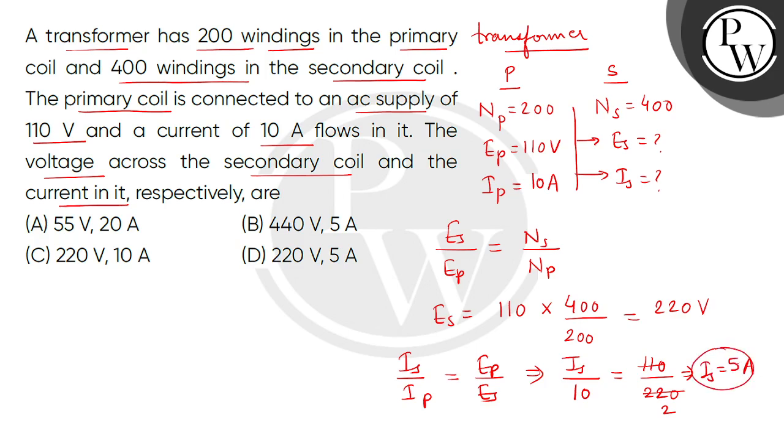So हमें मिल गए IS का answer 5 ampere और ES का answer 220 volt. So correct answer will be option D. Thank you.